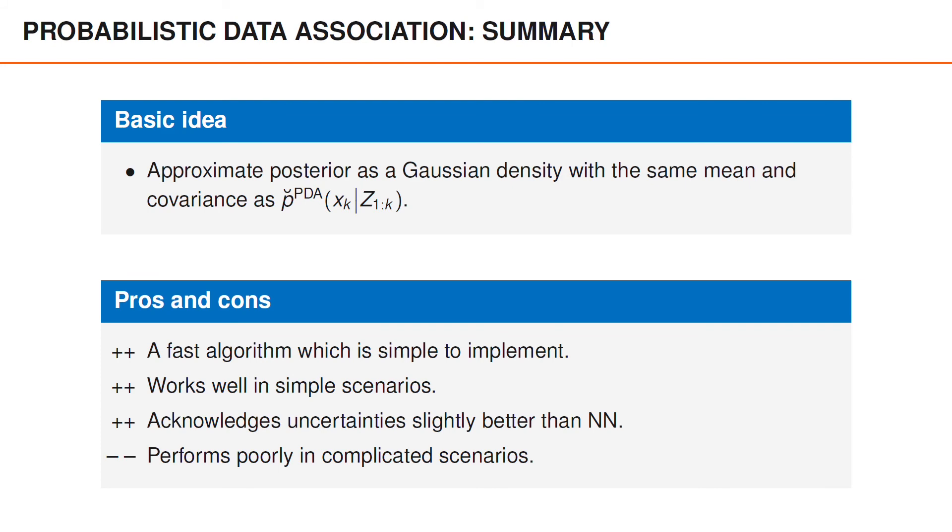A consequence of this is that it sometimes manages to keep track of the object in situations when the nearest neighbor doesn't. Still, the posterior density is often far from Gaussian, and the PDA approximation will then yield poor performance compared to using the true posterior.